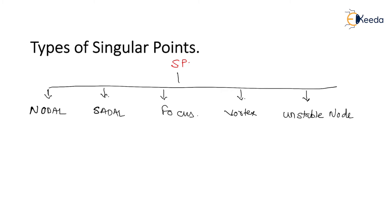So let us go with the first condition: nodal point. Now if I am having the s-plane — this is my j-omega axis and this is sigma — if all the pole locations are on the left-hand side (LHS) of the s-plane, then that singular point is said to be a nodal singular point. Since all the pole locations are on the LHS, this nodal singular point is stable.